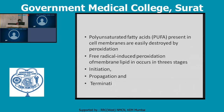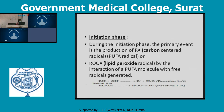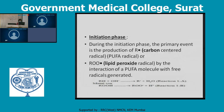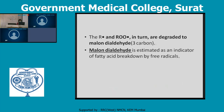In the initiation phase, the primary event is the production of R — that is, radical carbon-centered radicals — from PUFA. This forms PUFA or lipid peroxide radicals by interactions of PUFA molecules with generated radicals, yielding carbon-centered radicals and lipid peroxide radicals. These are degraded to form malonaldehyde, which is estimated as an indicator of fatty acid breakdown by free radicals.